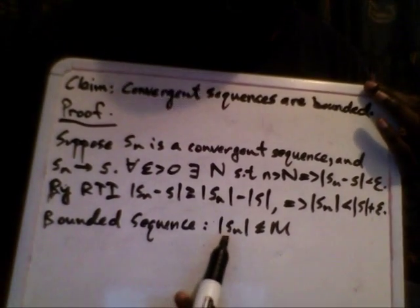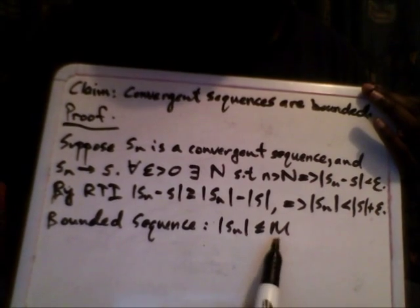Now, how are we going to show that convergent sequences are bounded? The definition of a bounded sequence states that you have a constant M that is greater than or equal to the absolute value of Sₙ. So informally, a bounded sequence satisfies |Sₙ| ≤ M for some constant M.